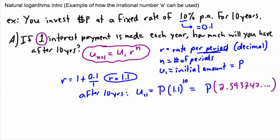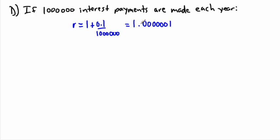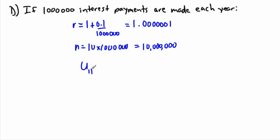Finally, what if we make a million interest payments per year? The rate is 1 plus 0.1 divided by a million, giving R = 1.0000001. And N is 10 years times a million, giving 10 million periods. So U11 equals P times 1.0000001 to the power of 10 million.